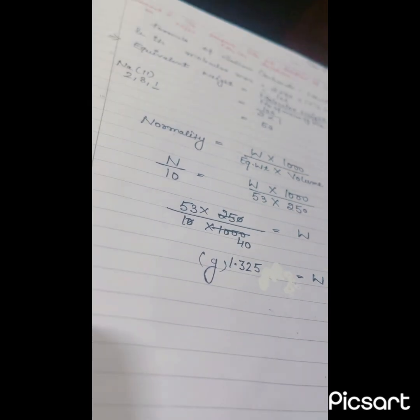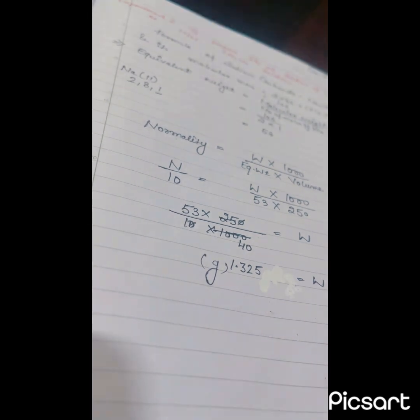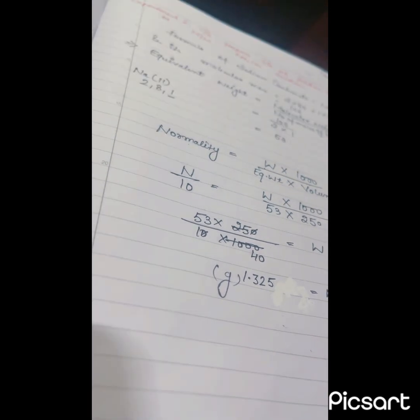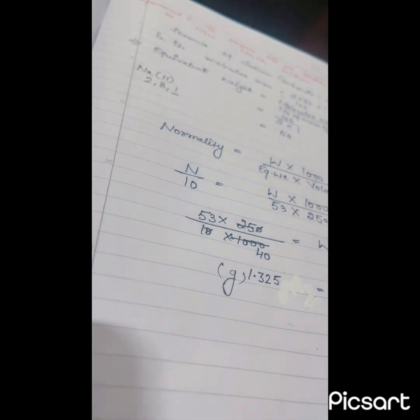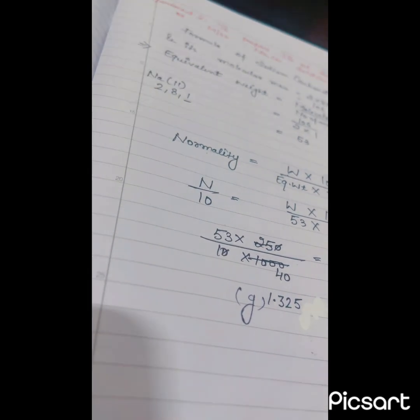From that value of sodium carbonate, we can understand that 1.325 grams of sodium carbonate is added in 250 ml solution with the continuously stirring. Now our N by 10 normality or M by 20 molarity is prepared.